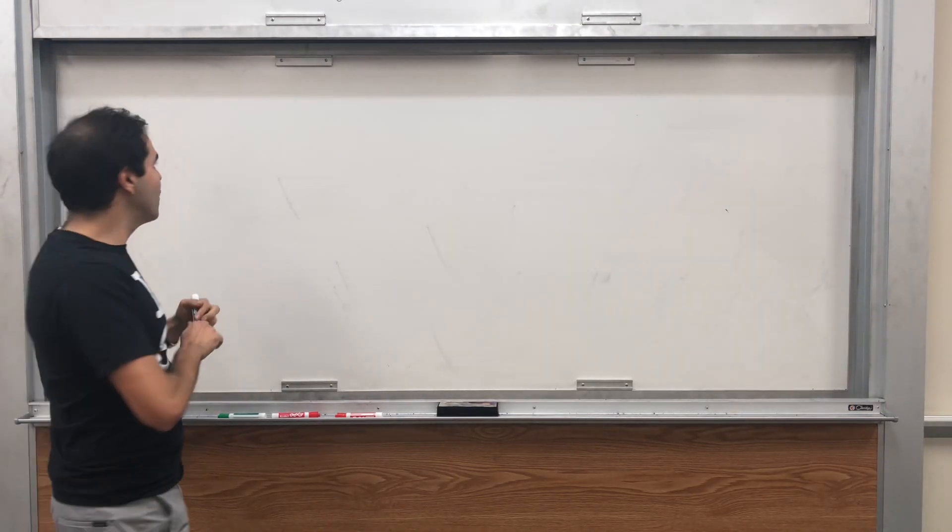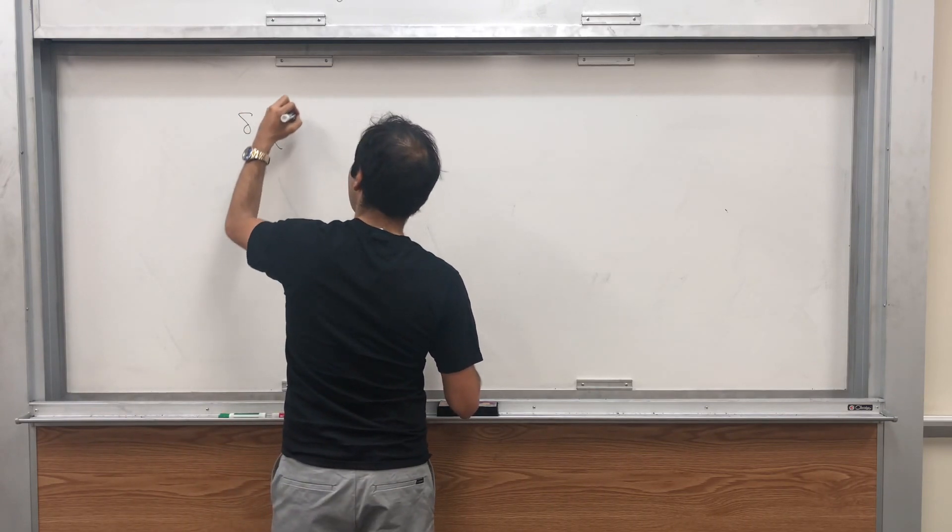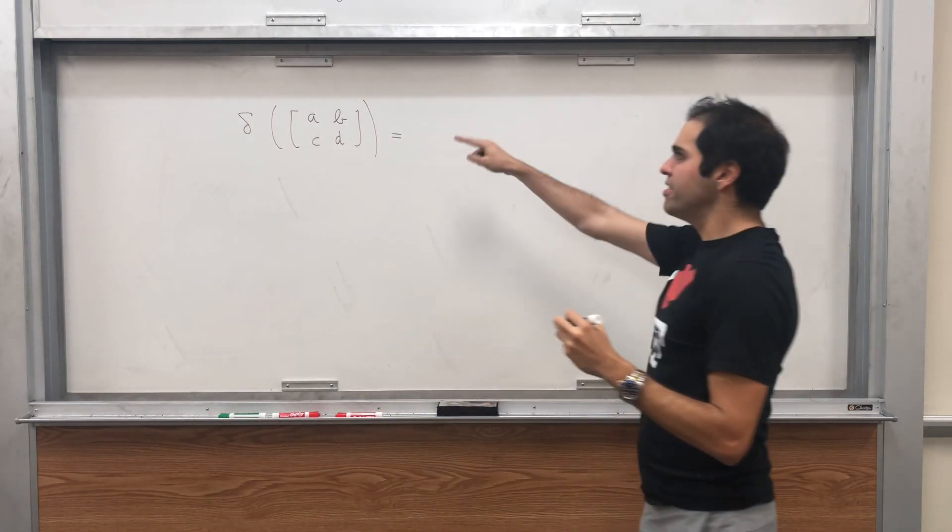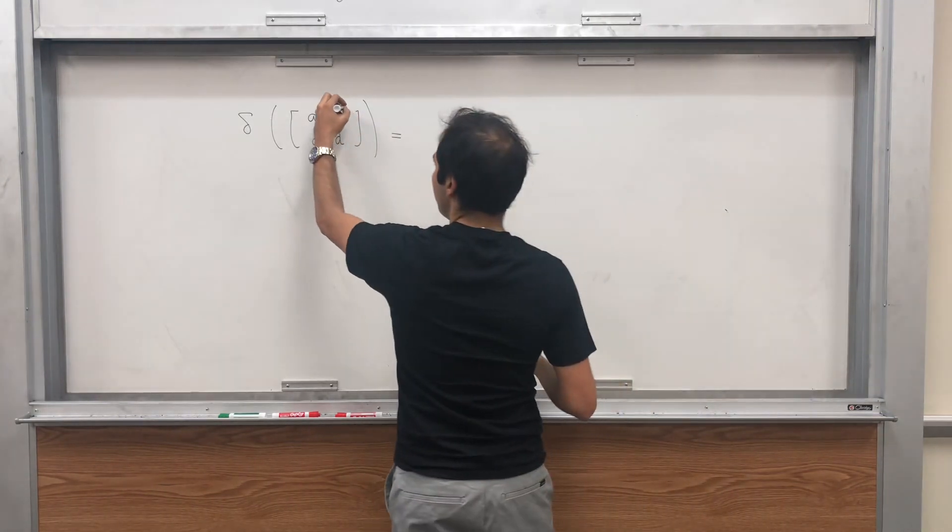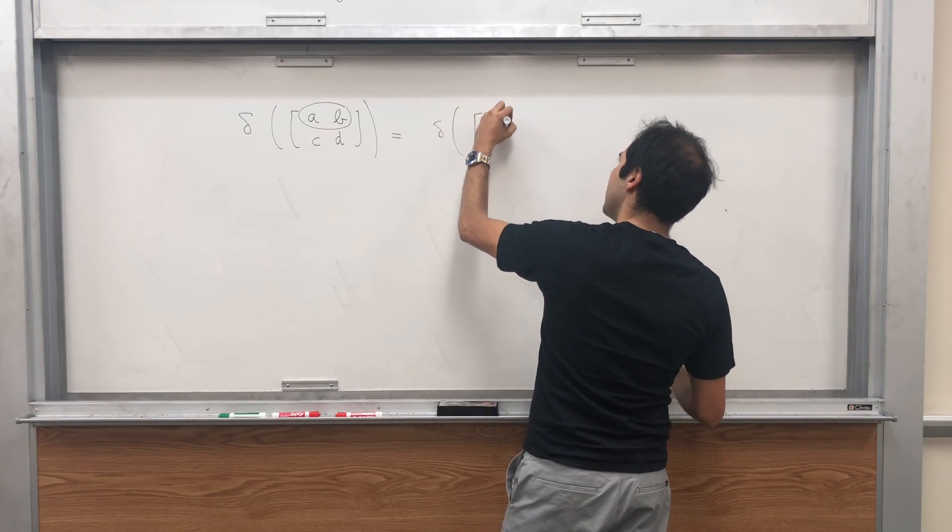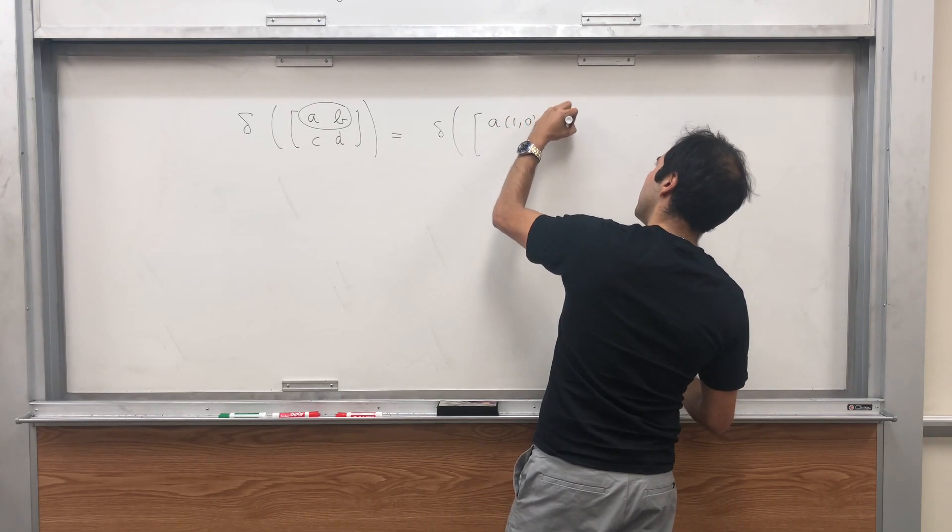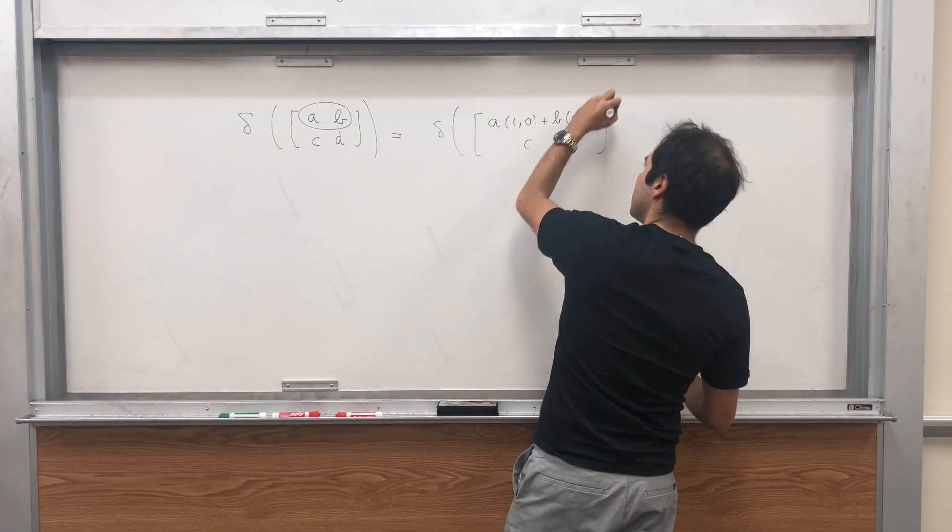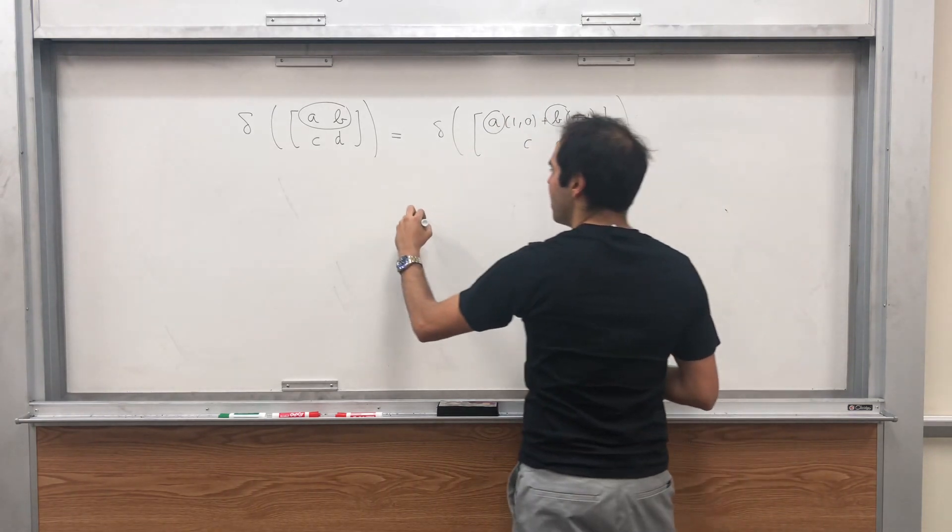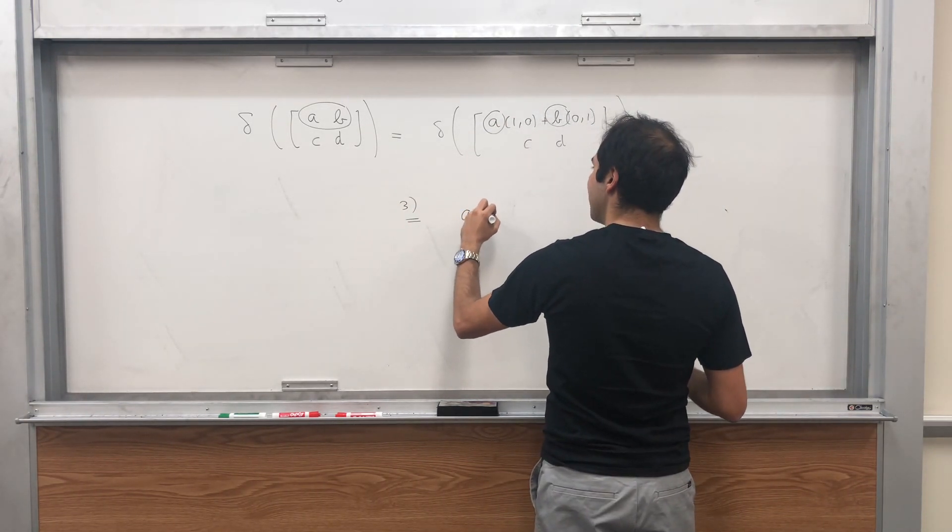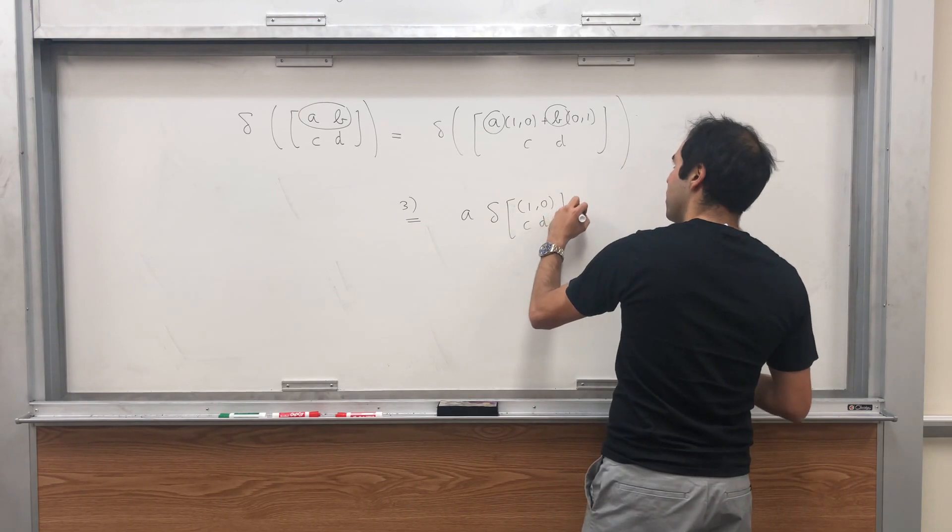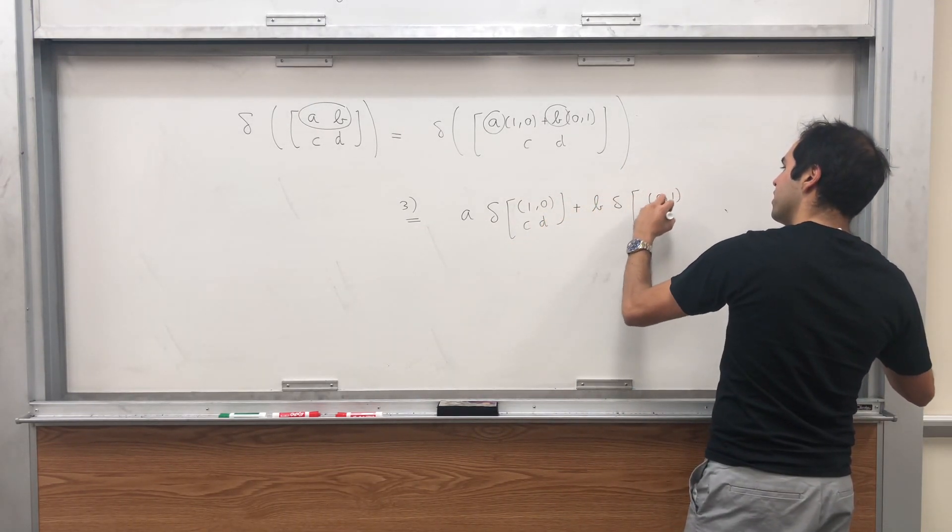All right, let's figure out what our delta is. So delta of ABCD. Here's the thing, this is linear in the first row. We know that ABCD is delta of A times 1, 0 plus B times 0, 1, and CD. A and B are constants, and therefore by multilinearity, by property 3, this is the same as A times delta of 1, 0, CD plus B times delta of 0, 1, CD.